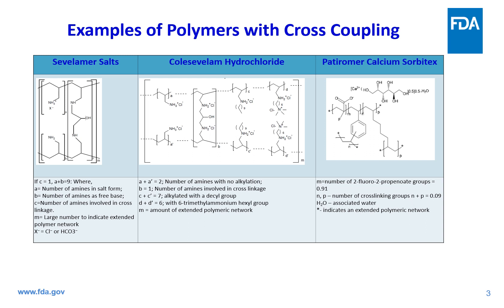In the first example, sevelamer, which is a derivative of polyallylamine, is cross-coupled with epichlorohydrin — known as Colesevelam hydrochloride. There are additional alkylations in addition to the cross-coupling of polyallylamine with epichlorohydrin, so there are two types of cross-coupling in patiromer. Additionally, the patiromer ion is complexed with calcium sorbitol.